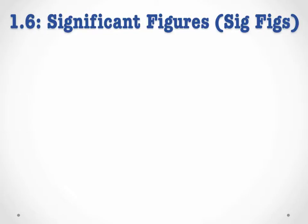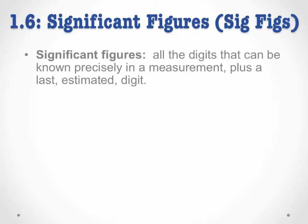Let's start by defining the term significant figures. Significant figures are often referred to as sig figs, so from now on I'm going to be using the phrase sig figs instead of significant figures. Significant figures are all the digits that can be known precisely in a measurement plus one last estimated digit.